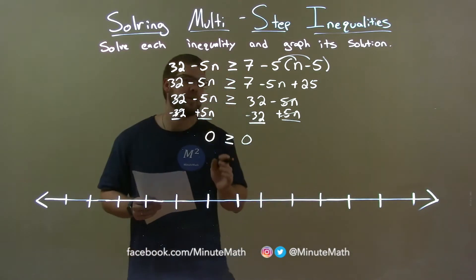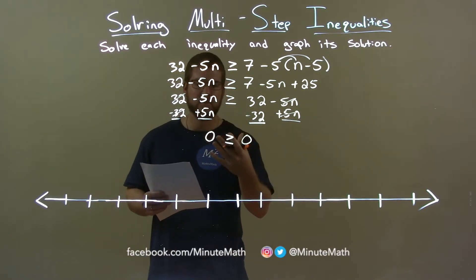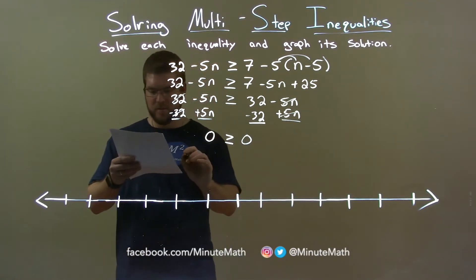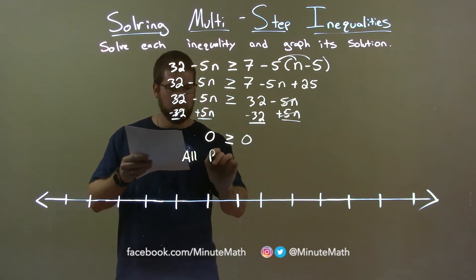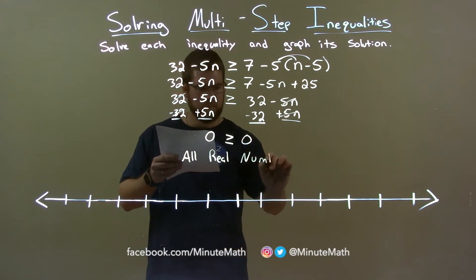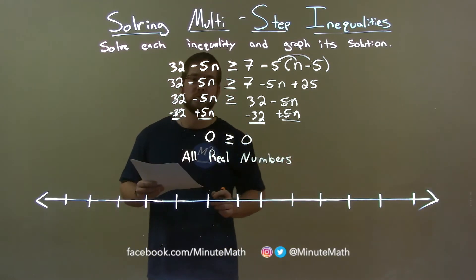So, when we have this and our variable disappears, be careful, this is a true statement. So, what that tells us here is that all real numbers are solutions here.